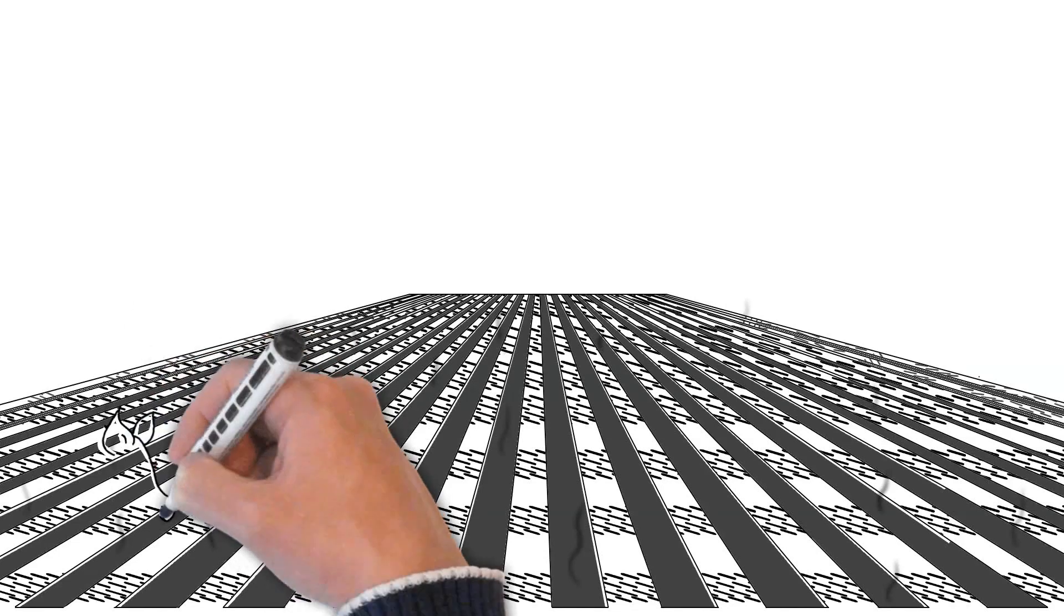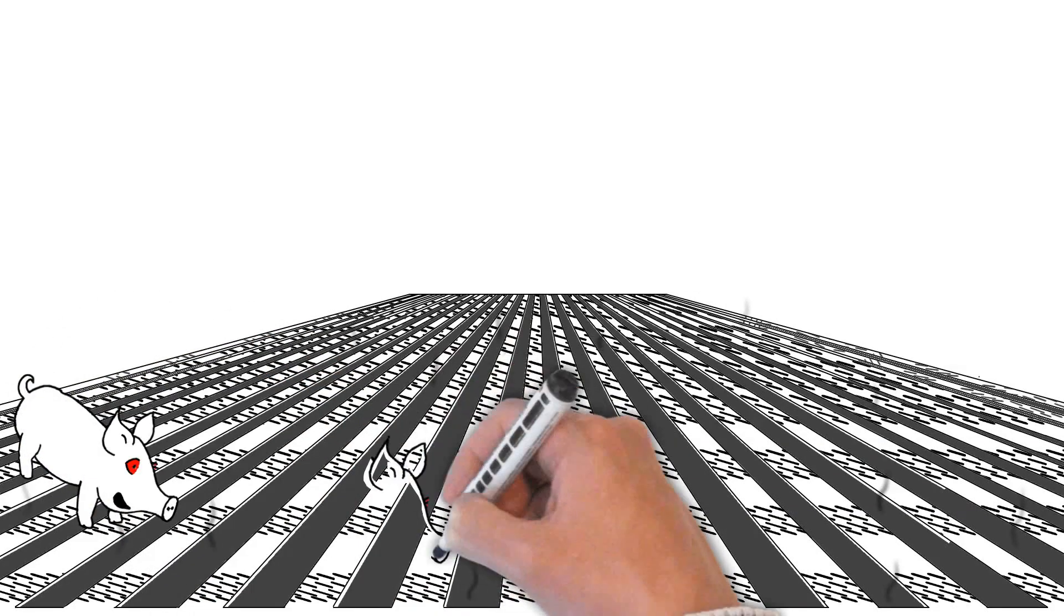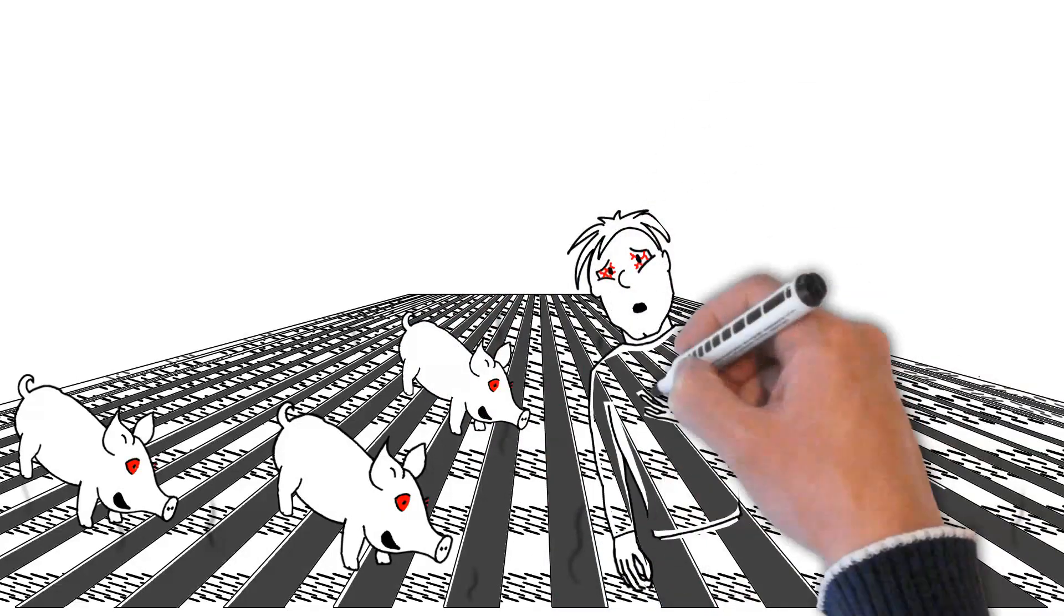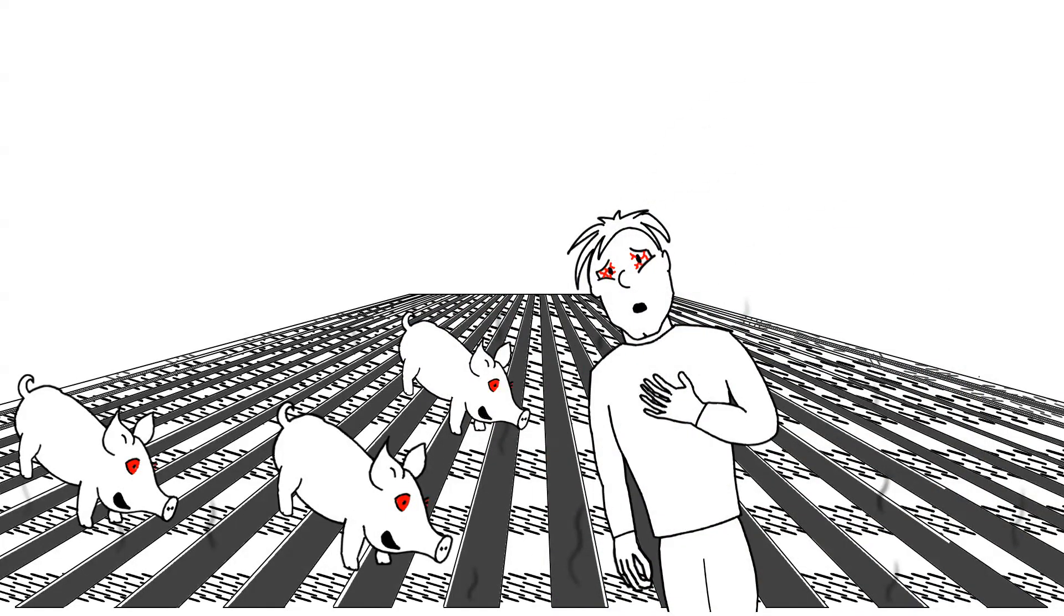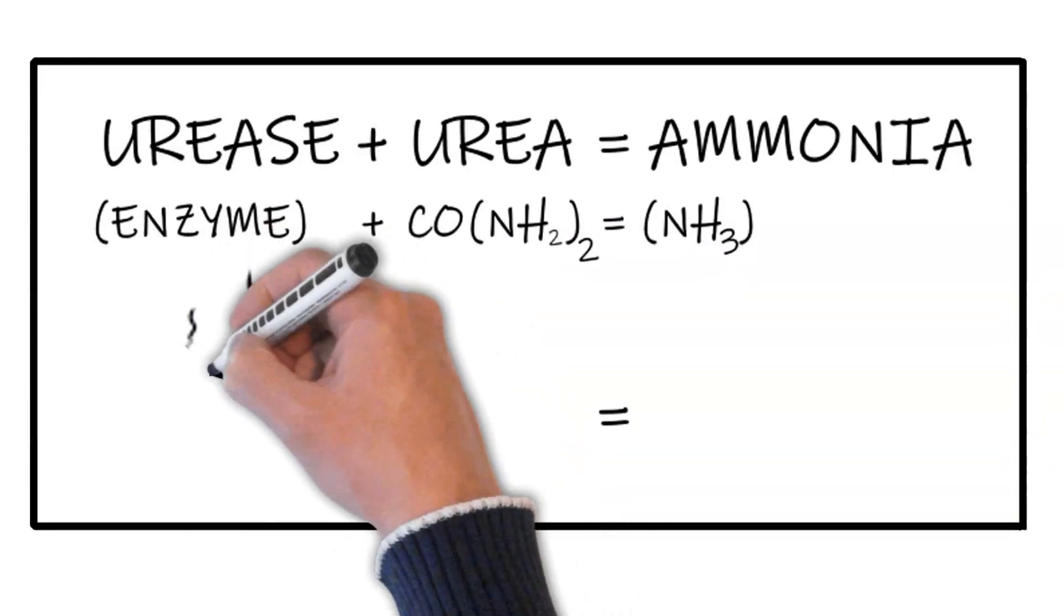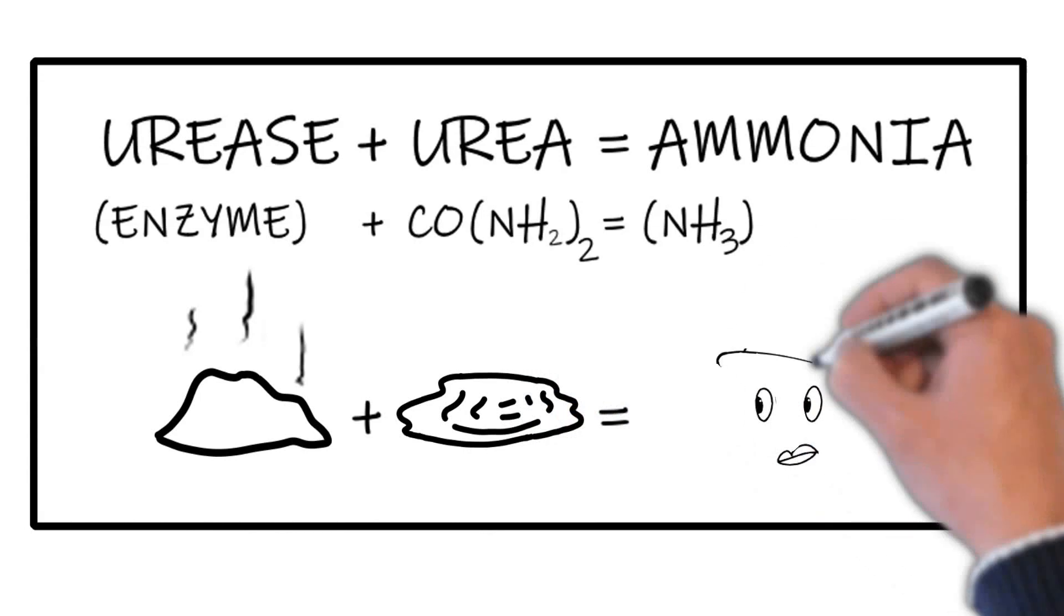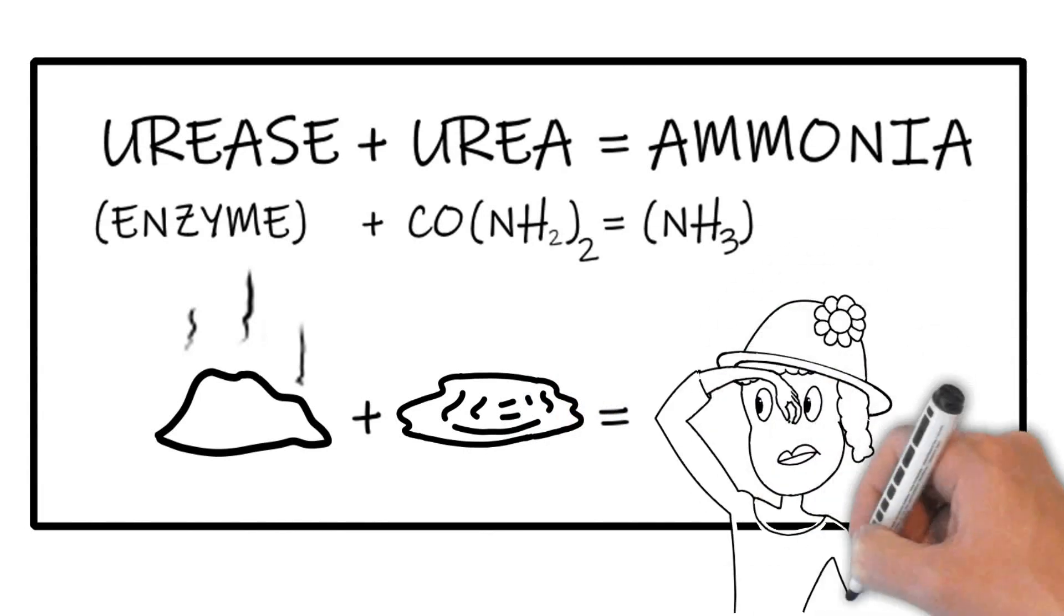The slurry, a mixture of feces and urine under the slatted floors, proved to be detrimental to both the indoor and outdoor climate. When fecal bacteria comes into contact with urea, a compound found in urine, a pungent chemical is created, called ammonia.